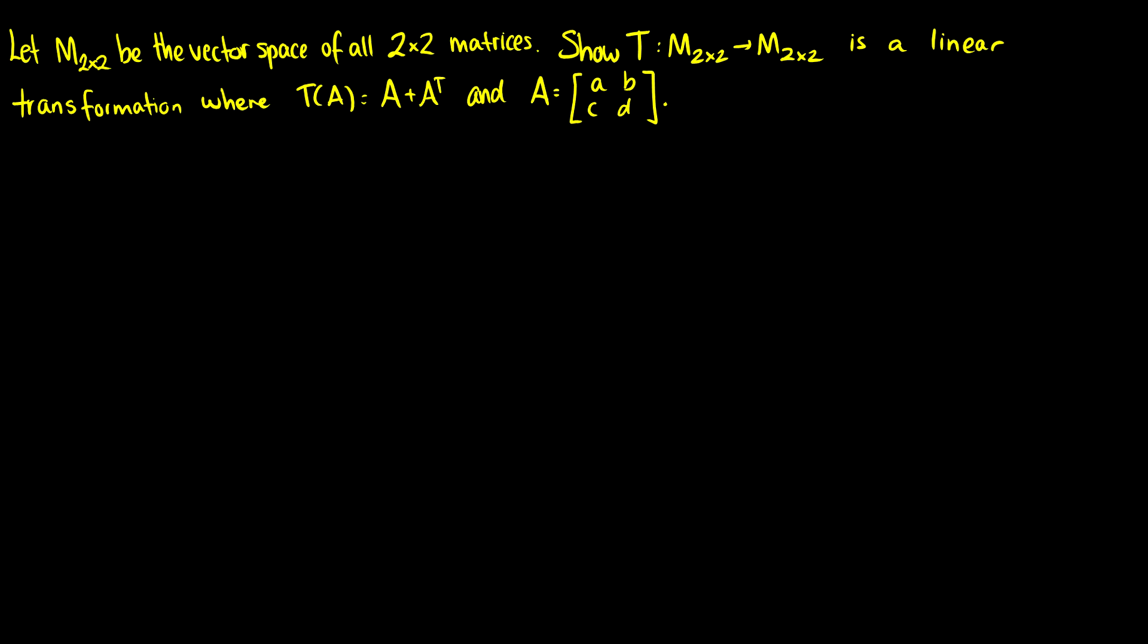In this video we're going to do some vector space proofs with linear transformations. I'm going to let M subscript 2 by 2, so all 2 by 2 matrices, be a vector space. So I have a transformation from M_{2x2} to M_{2x2}, which means we take a 2 by 2 matrix, put it through a function, and then it becomes another 2 by 2 matrix. I want to show it's a linear transformation where our transformation function takes a matrix A, takes itself, and adds its transpose. We're going to let A be equal to ABCD.